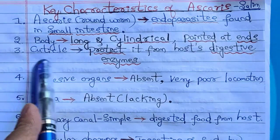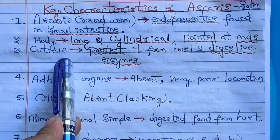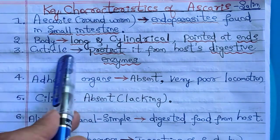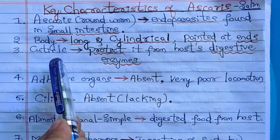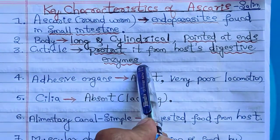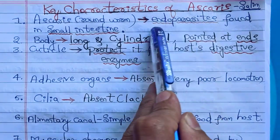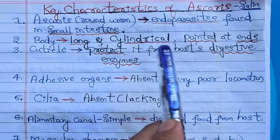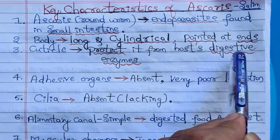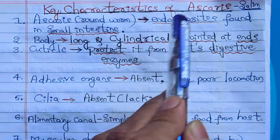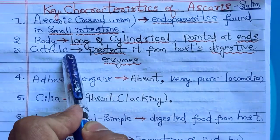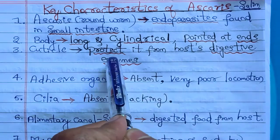The body of Ascaris is covered by a cuticle — a layer present above the epidermis. It protects the Ascaris from the host's digestive enzymes. Since it lives inside the small intestine, many digestive juices containing digestive enzymes are secreted there, so the cuticle protects it from those enzymes.